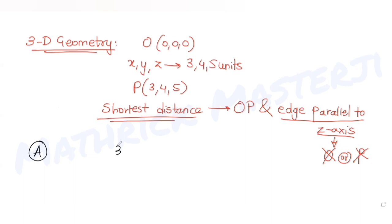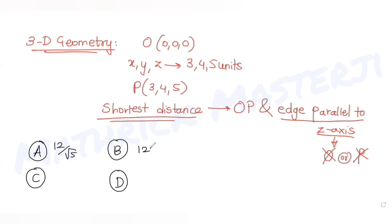We need to figure out which answer choice is correct. The options are: 12 over root 5, 12 root 5, 12 over 5, and 12 over 5 root 5. Let's see how to solve this question.